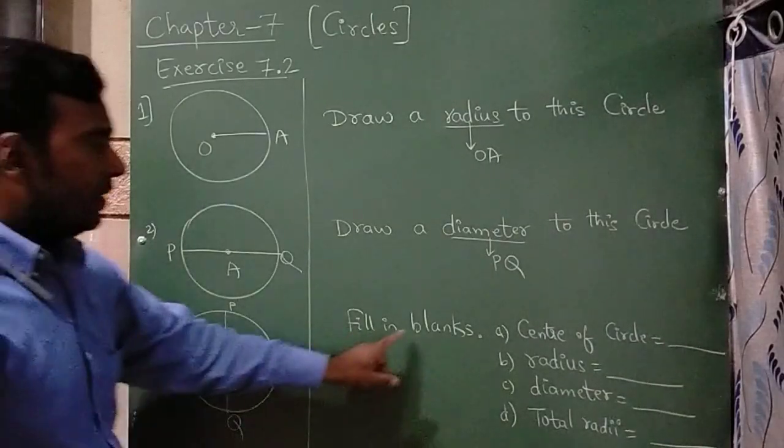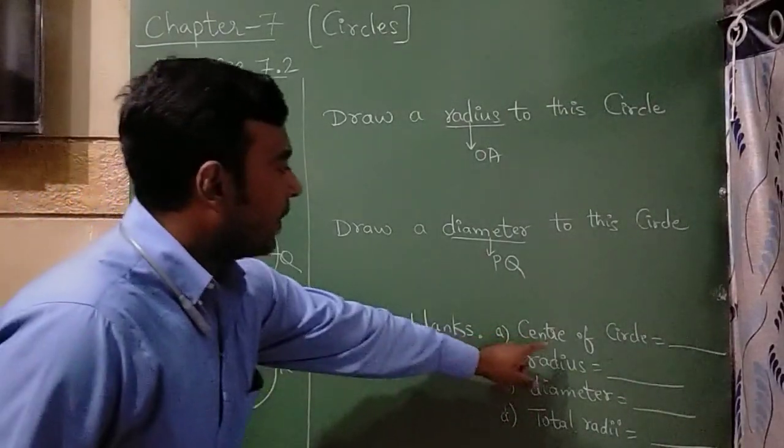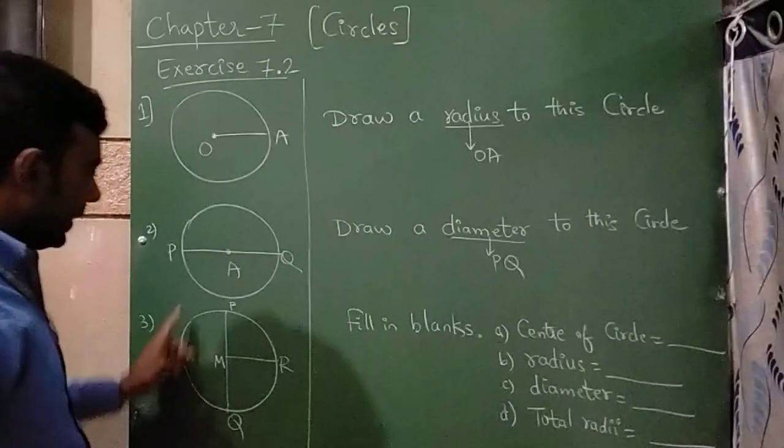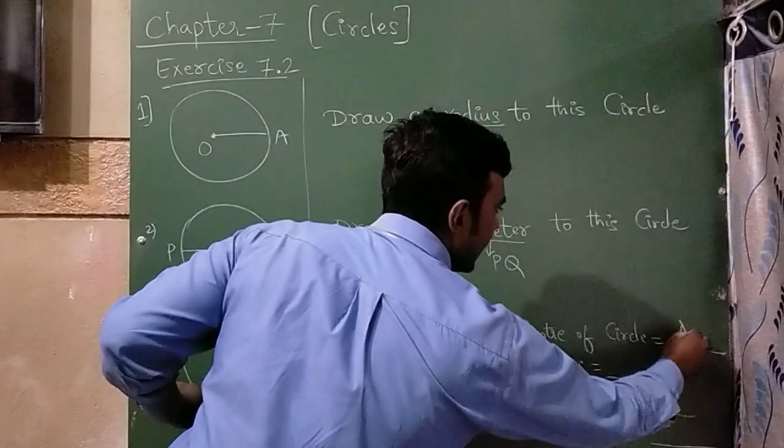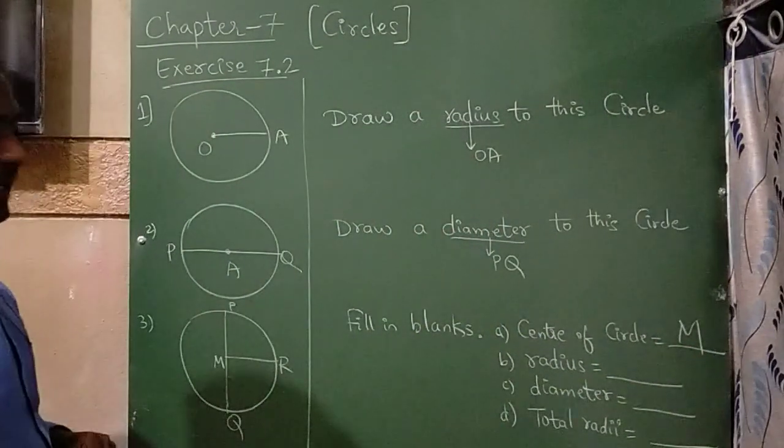In the third question they are telling fill in the blanks. Center of the circle - in this given circle, what is the center? So M. So M is said to be a center of the circle.